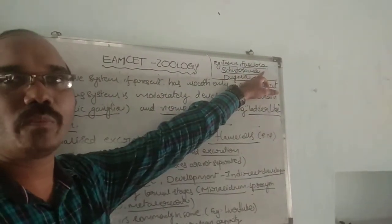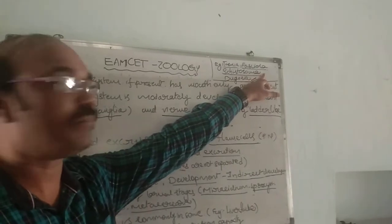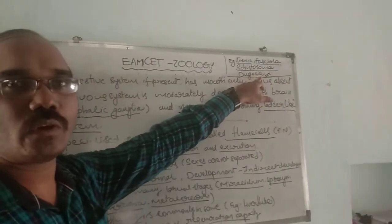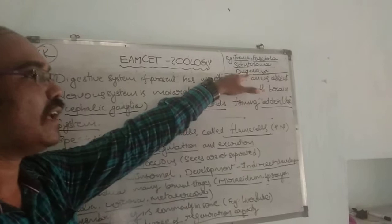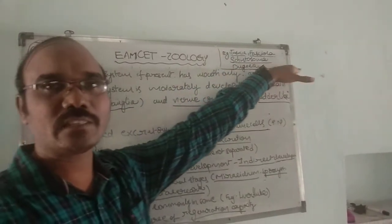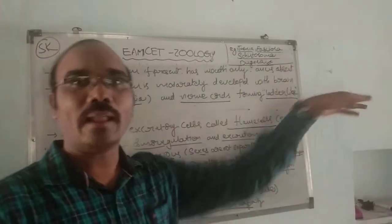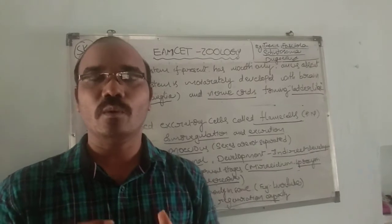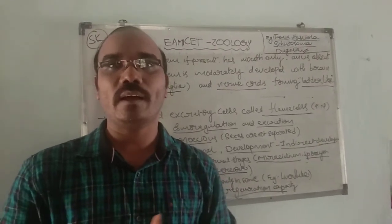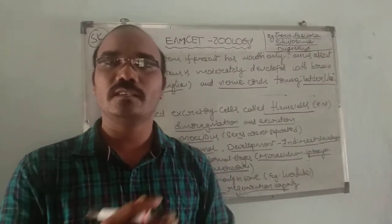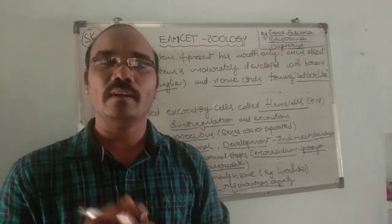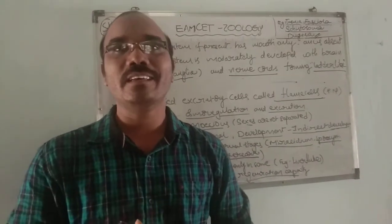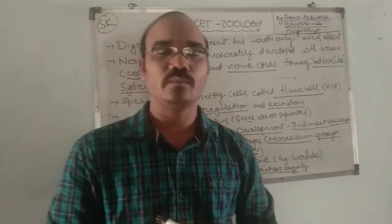Some common examples seen in Platyhelminthes include: Schistosoma (blood fluke) and Dugesia. These are some common examples of Platyhelminthes organisms. If you like my classes, please comment, share with your friends, and subscribe to my channel. Thank you.